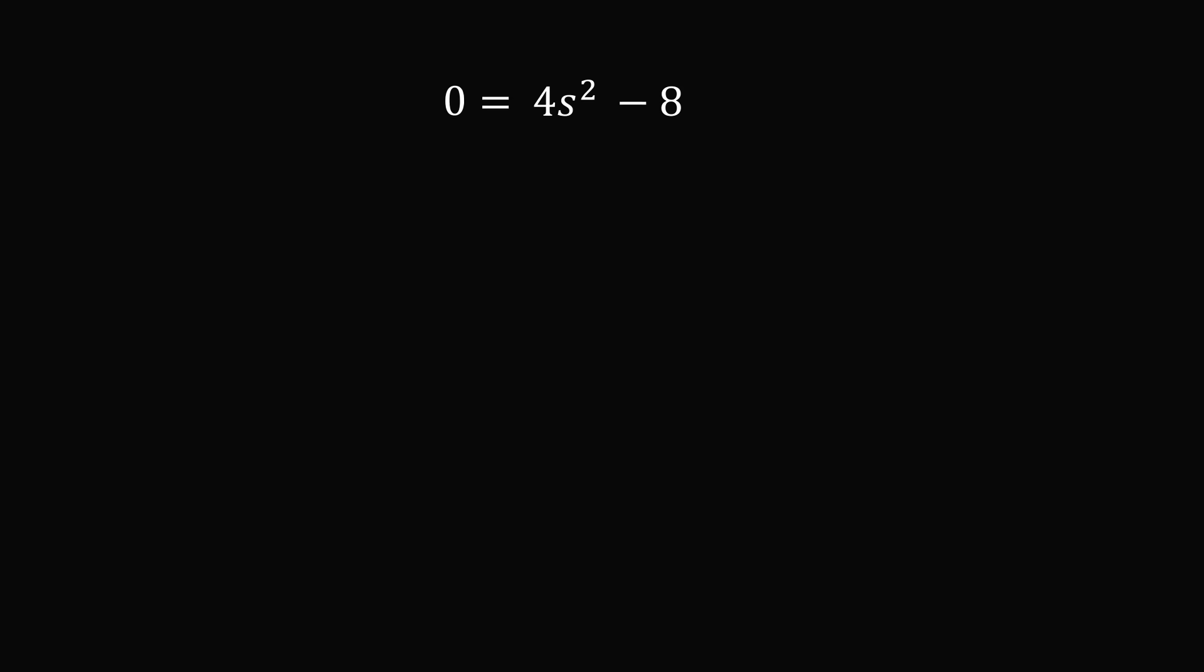0 is equal to 4S squared minus 8. Divide both sides of the equation by 4. Then we have S squared is equal to 2. We need a positive value because we're representing an area. And that means S is equal to the positive square root of 2. And that's the answer to this very interesting and challenging geometry problem.